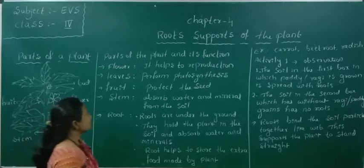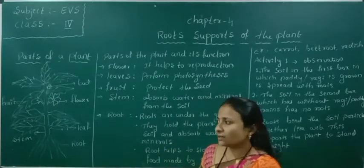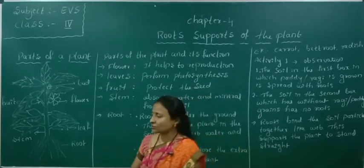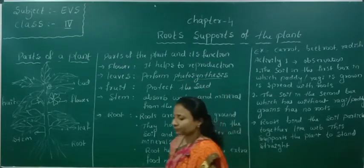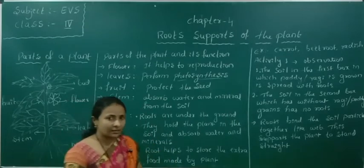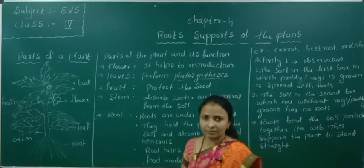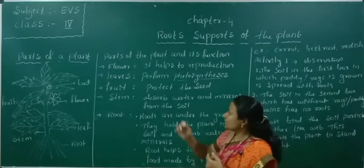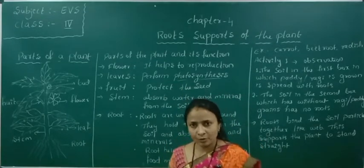Next, leaves. Leaves perform photosynthesis. Leaves are helpful for the production of food. Photosynthesis means the leaves absorb sunlight and moisture content from the atmosphere and produce food. These leaves then pass food to all parts of the plant.